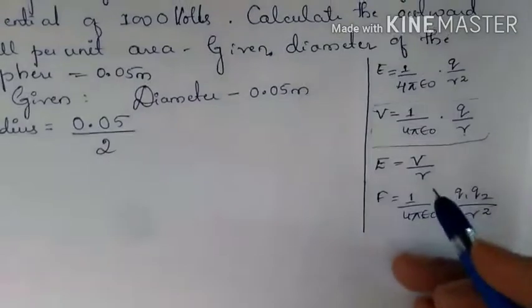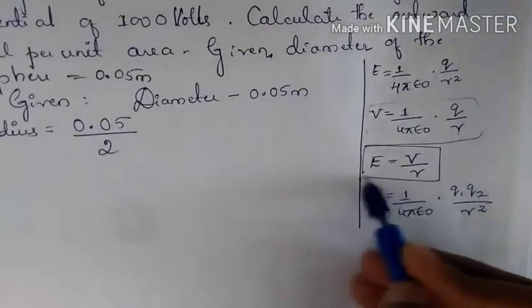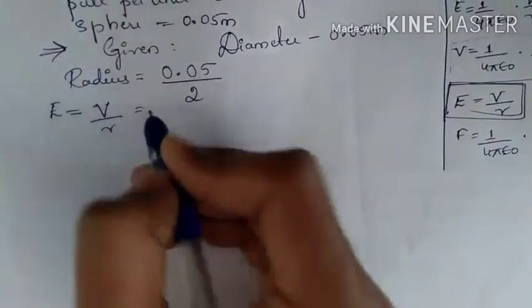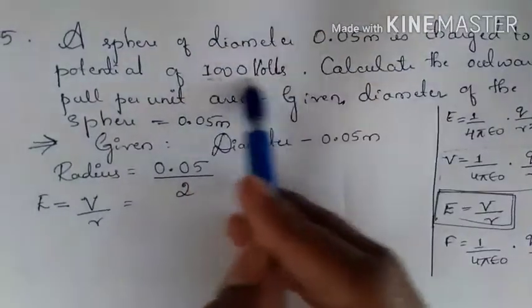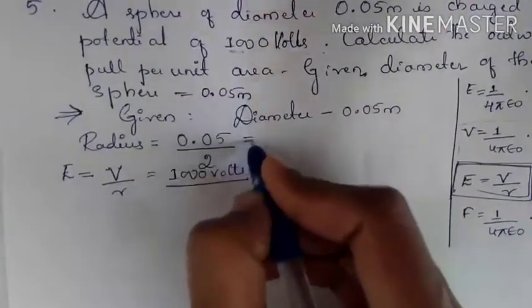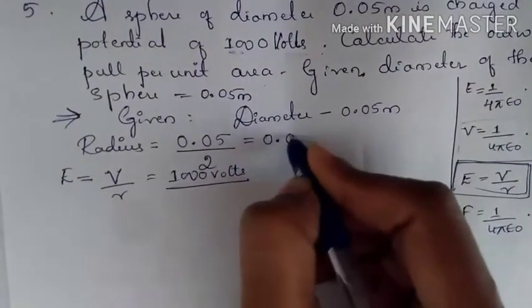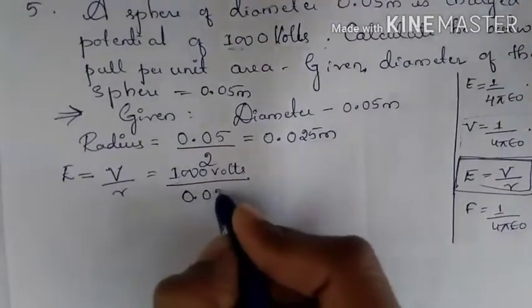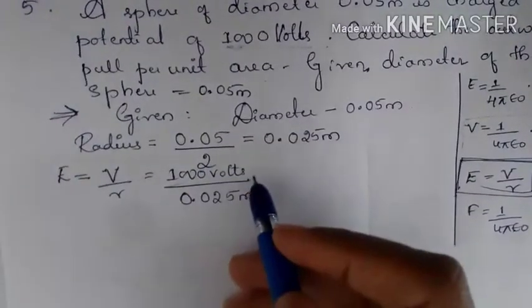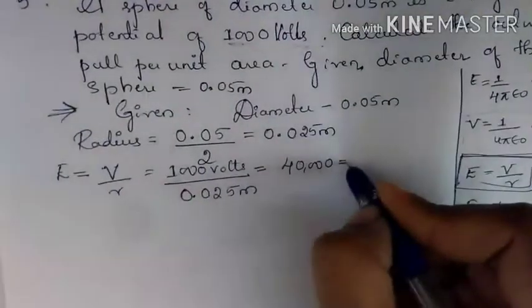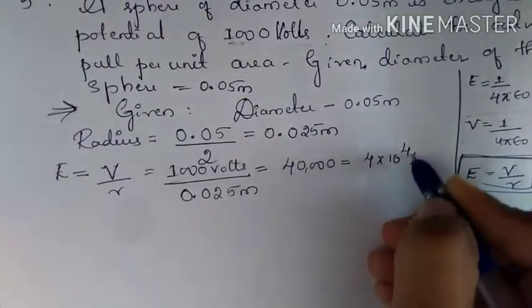We need the potential formula: E = V/R. Potential is 1000 volts, radius is 0.05/2 = 0.025 meters. Substituting: E = 1000/0.025, which gives approximately 40,000 Newton per Coulomb, or 4 × 10⁴ N/C.